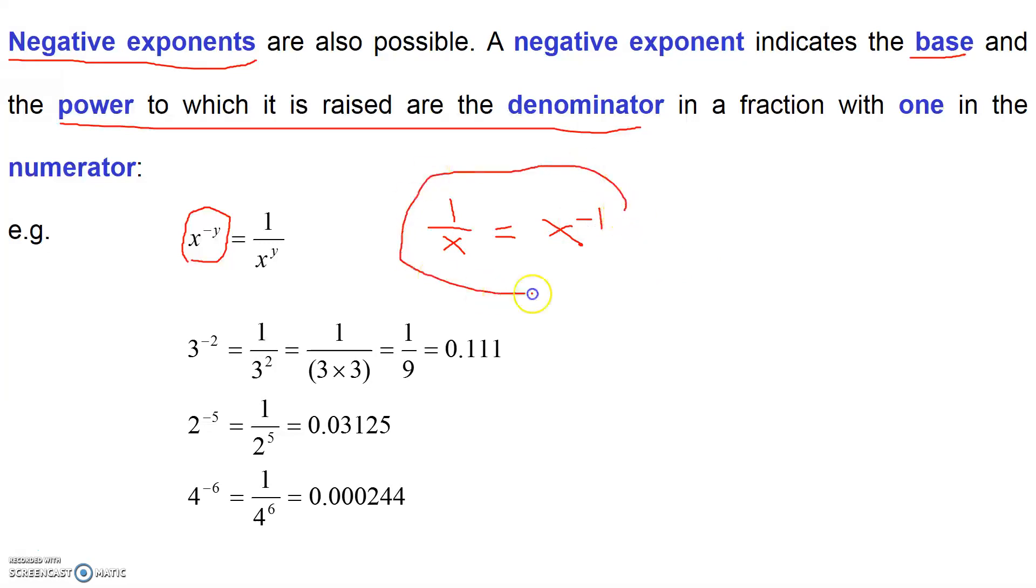So three to the minus two is exactly the same as one over three squared. Two to the minus five is the same as one over two to the five. Four to the minus six is exactly the same as one over four to the six. And you can see these give small numbers.